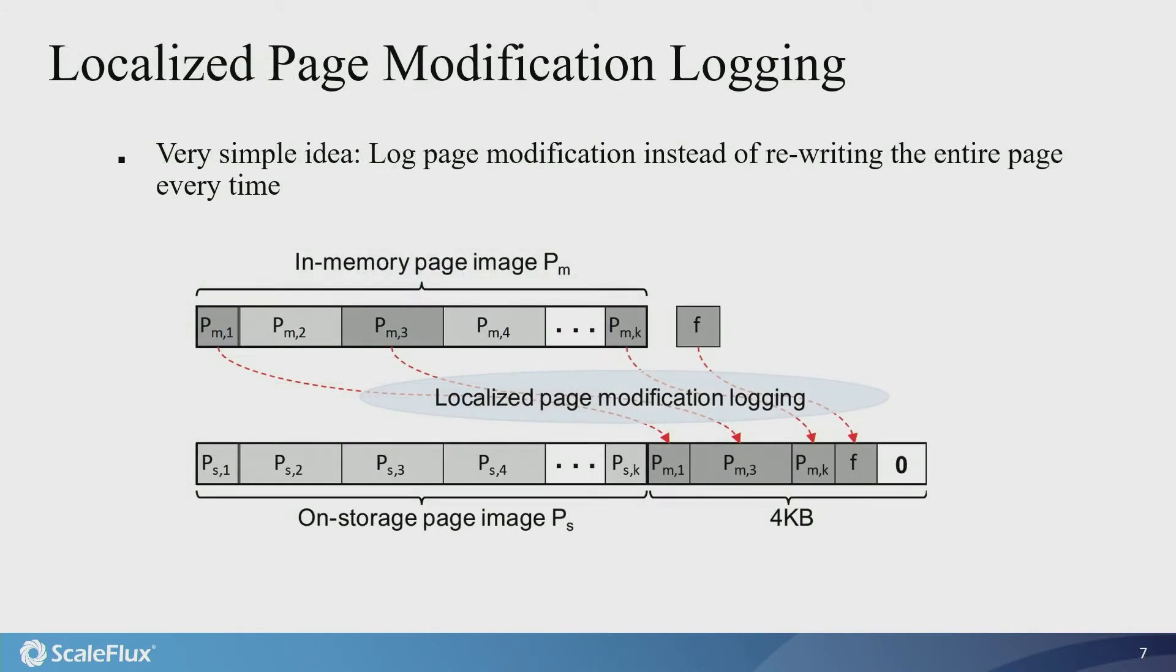Second, the second technique aims at reducing both page compression ratio and write amplification caused by page writes. It is motivated by a simple observation. For B+ tree page, the delta denotes the difference between its in-memory image and on-storage image. If the difference is significantly smaller than the page size, we can largely reduce the write amplification by logging the page modification data instead of writing the entire in-memory page image to the storage device.